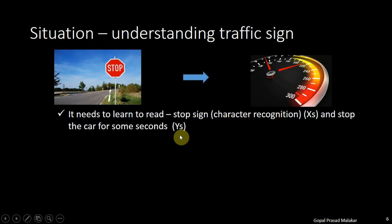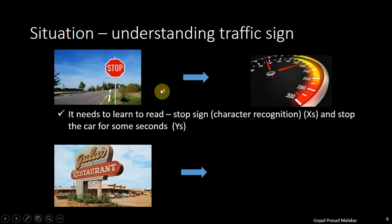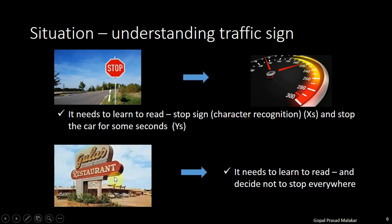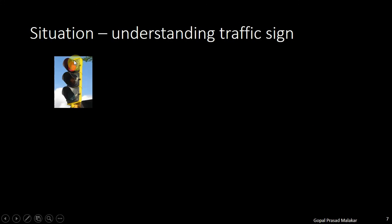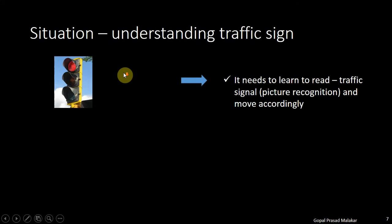The program needs to stop the car for some seconds. A stop sign can be written in a variety of ways on a variety of boards, and the program needs to learn to recognize it and stop. It should read the actual character, because if it stops just by looking at any board shape it might end up stopping everywhere, which is not desired. Similarly, it should read the traffic light situation — if it is a red signal, it should stop. The program needs to understand the picture, determine which color is active, and make a decision accordingly.